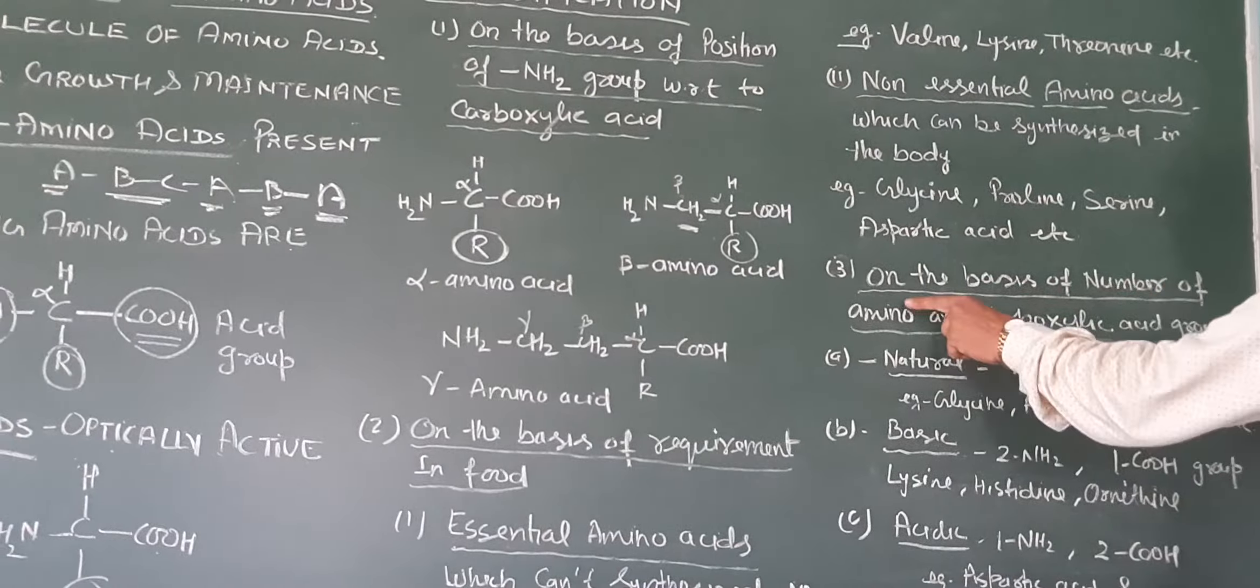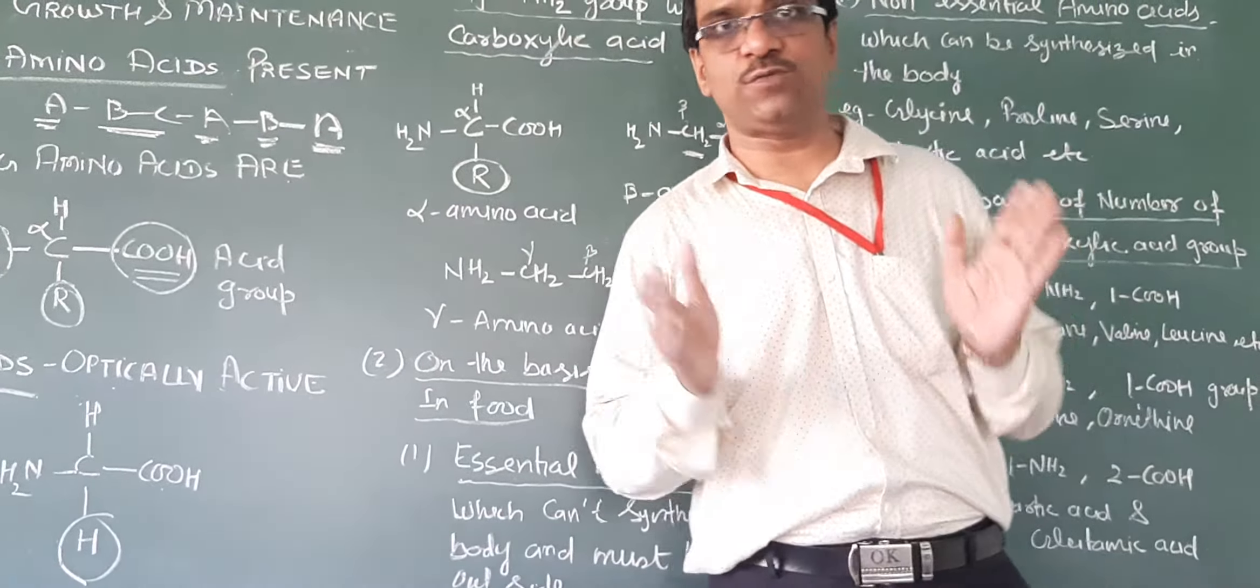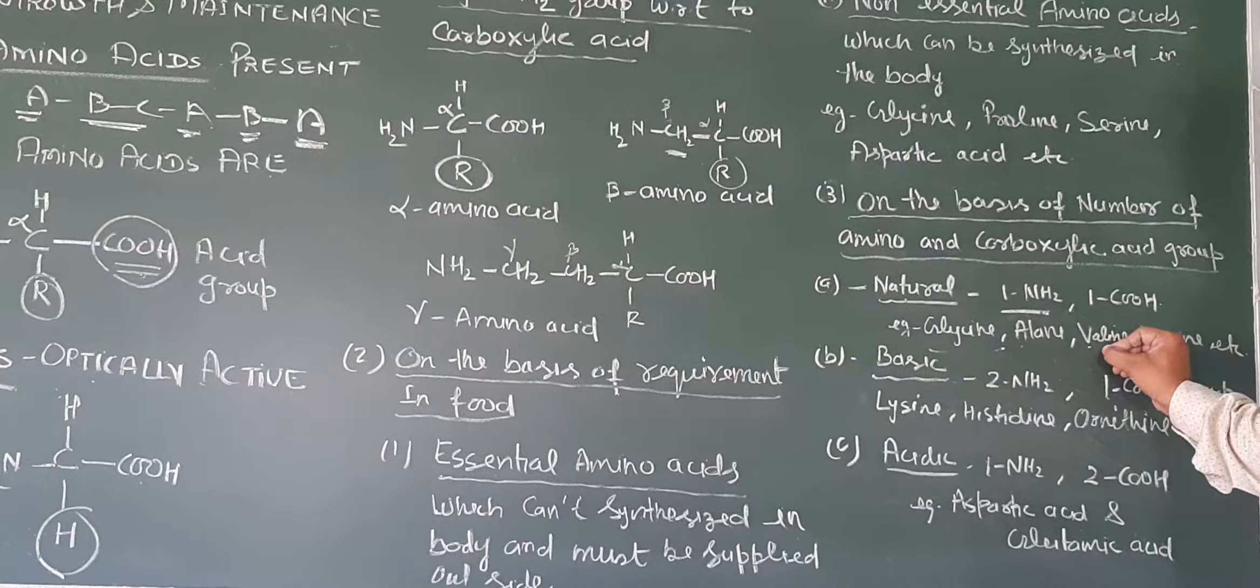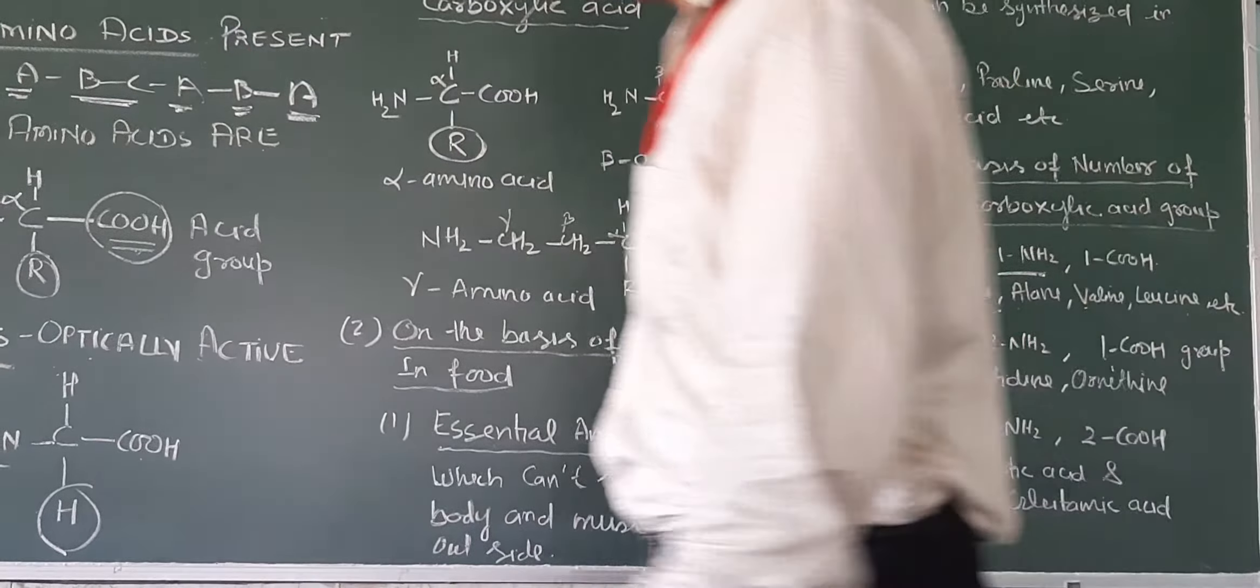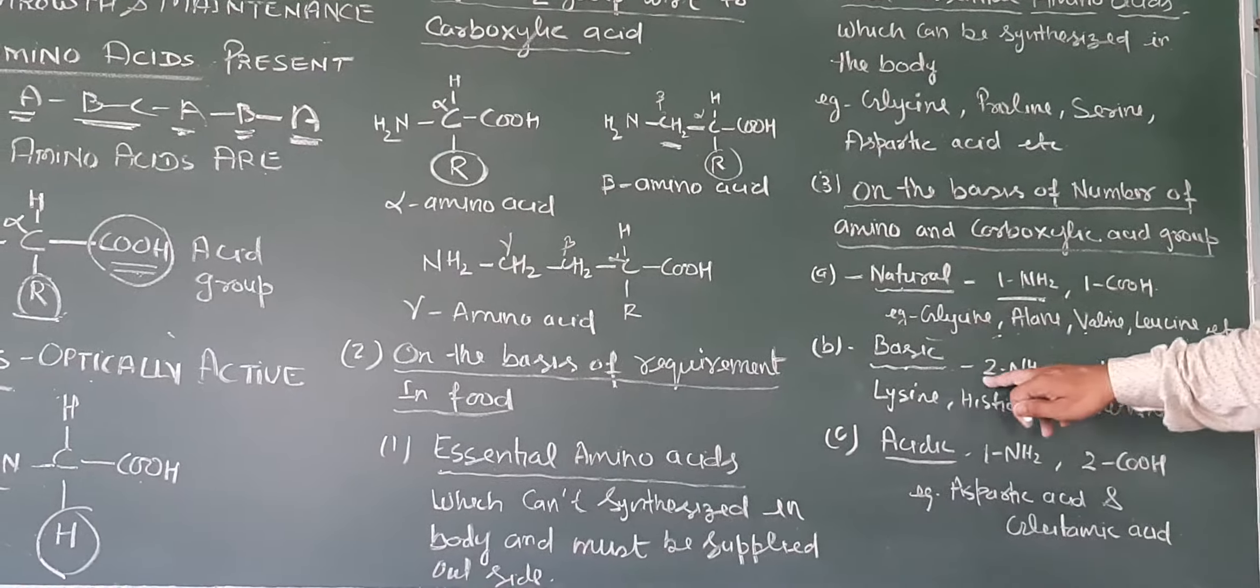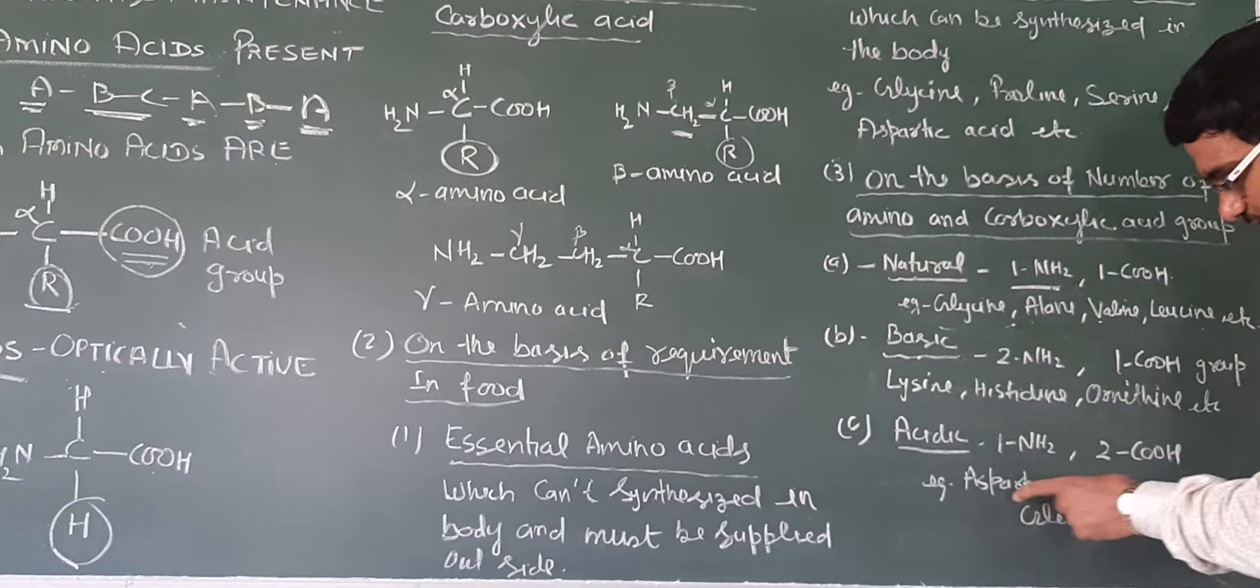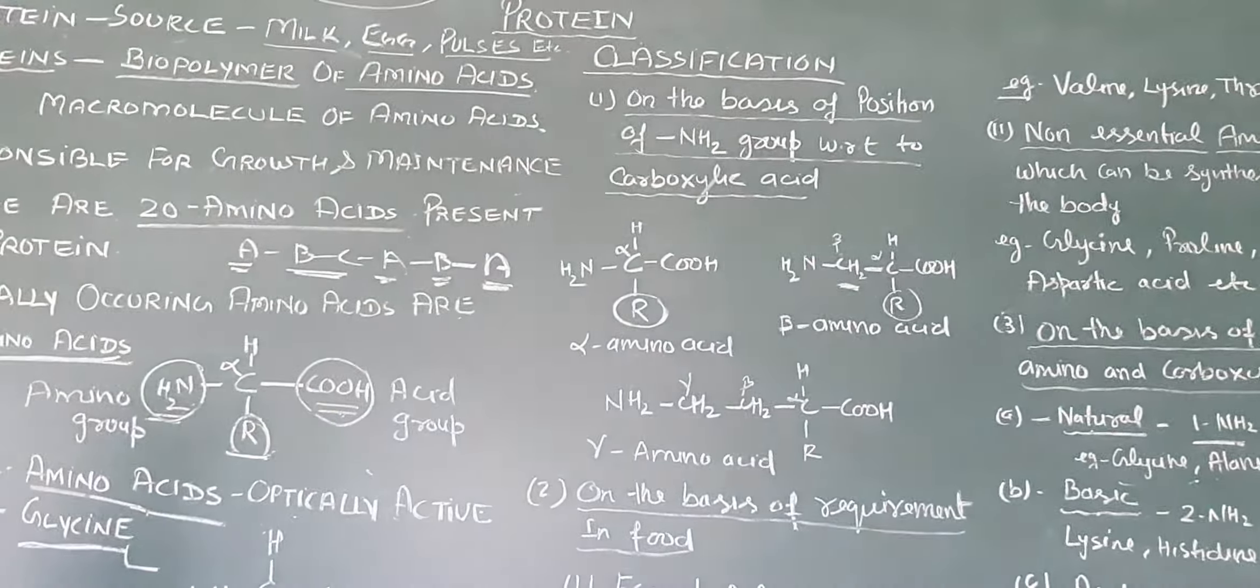Third, on the basis of number of amino and carboxylic acid groups. Neutral amino acids have one NH2 and one COOH group, like glycine or alanine. Basic amino acids have two NH2 and one COOH group, like lysine, histidine, and arginine. Acidic amino acids have one NH2 and two COOH groups, like aspartic acid. So this is all about classification and general description of proteins. Thank you.